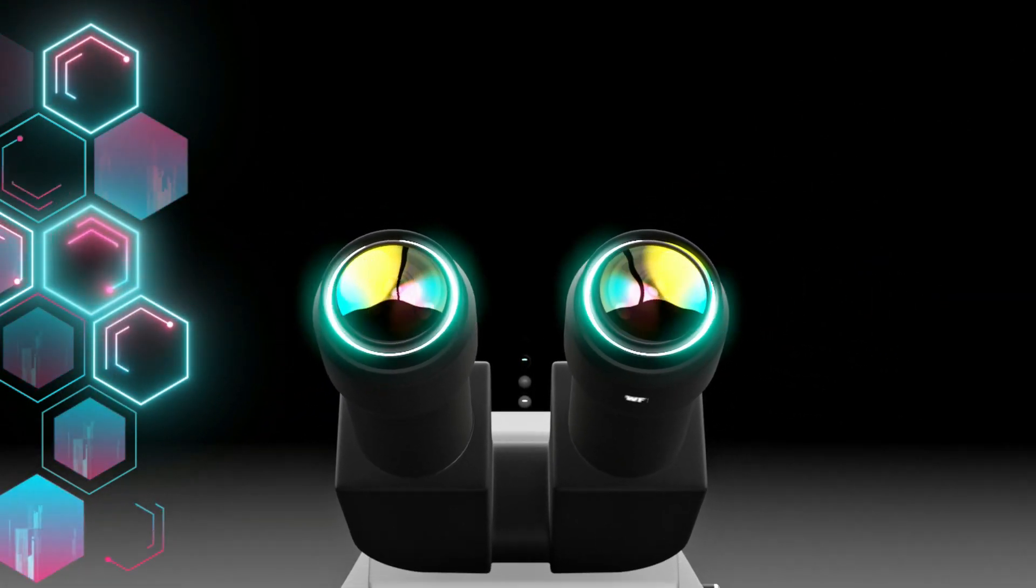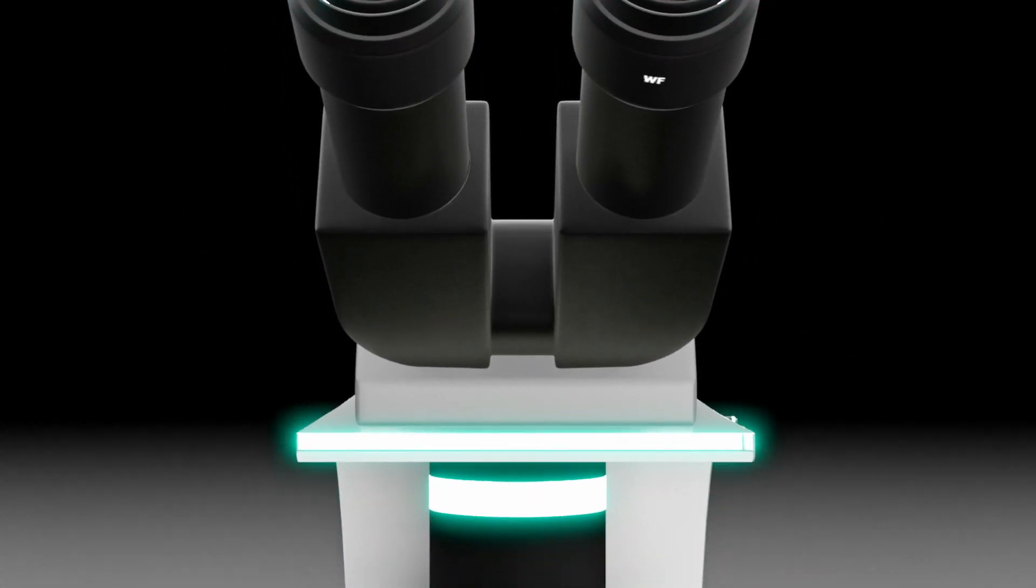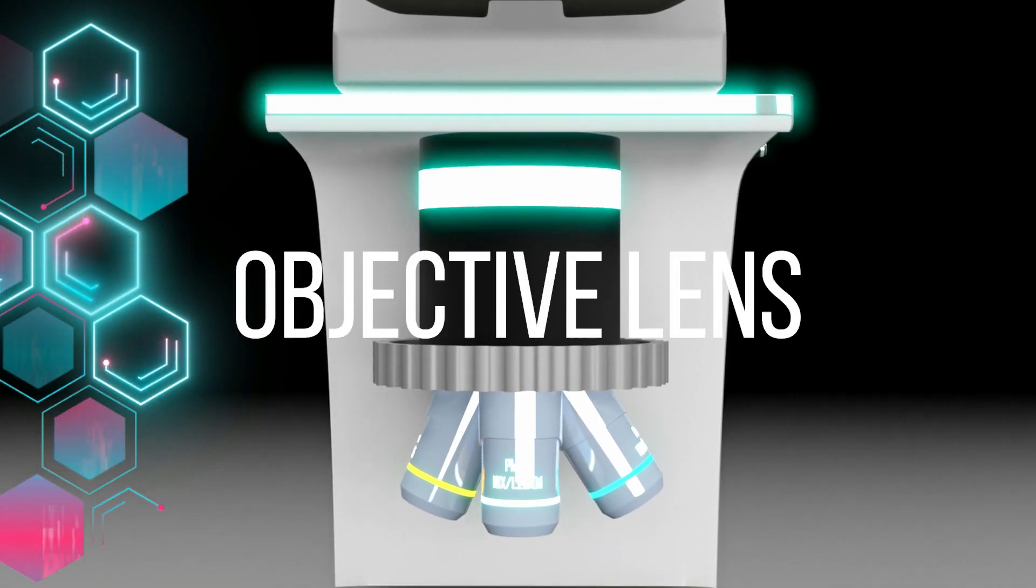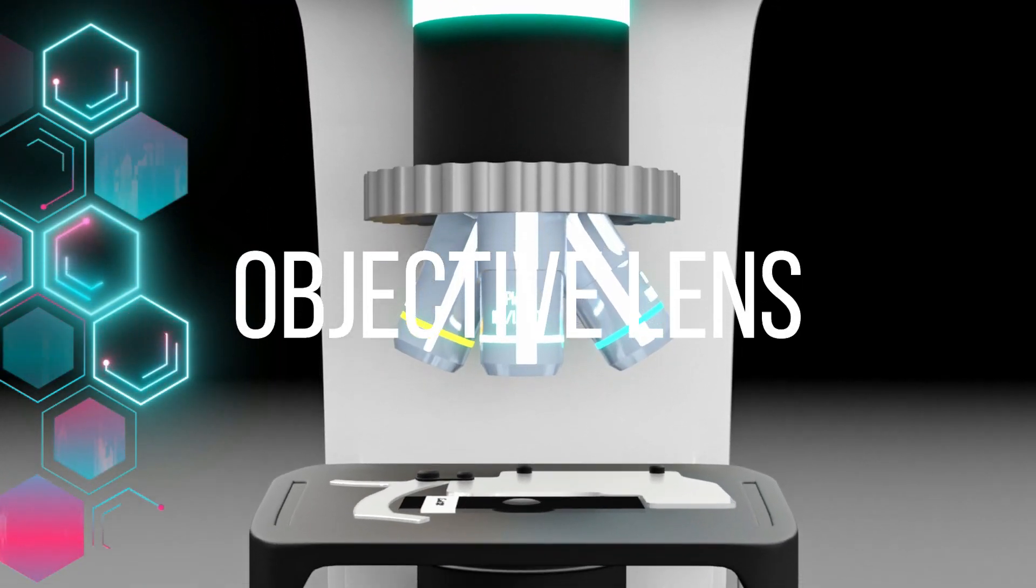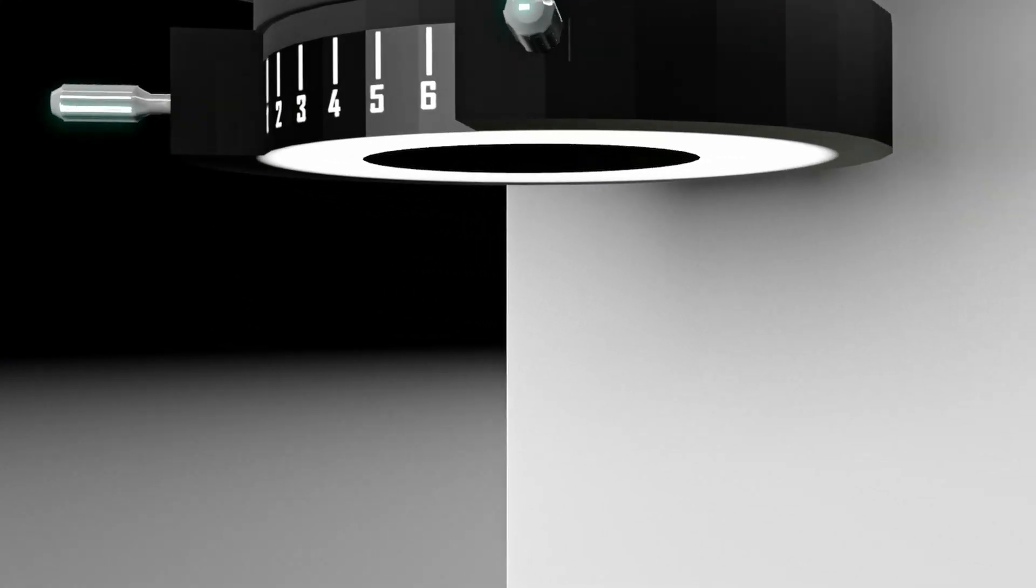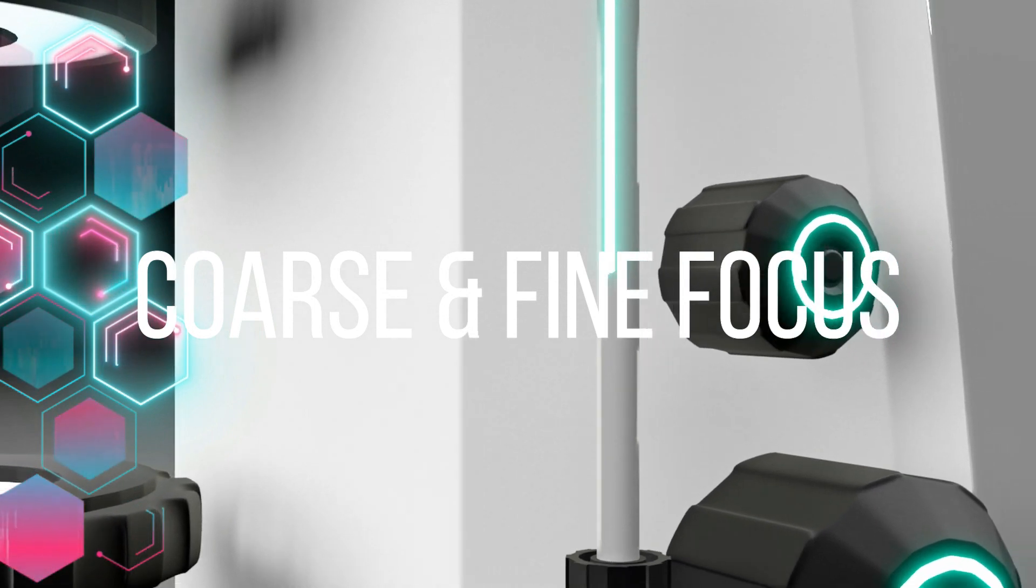Microscope has an ocular lens which works in collaboration with one of the three objective lenses. Condenser along with the coarse focus and fine focus adjustment knobs are vital for clarity and resolution.